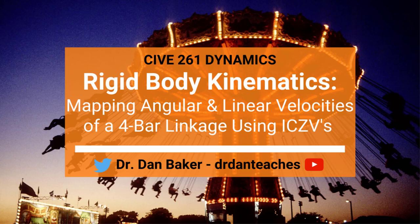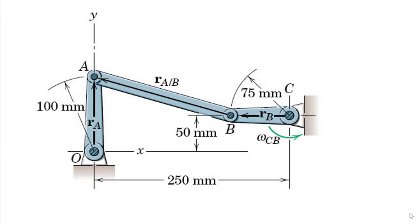Welcome to this video talking about how we map the velocity — both the linear and angular velocities — on all parts in a four-bar linkage using the instantaneous centers of zero velocity. We have a 75 millimeter member running from C over to B that is in fixed axis rotation around point C, so we can put an ICZV there. That's the ICZV of member BC. Coming over to the other side, the ICZV at point O of body OA — both of those bodies are in fixed axis rotation.